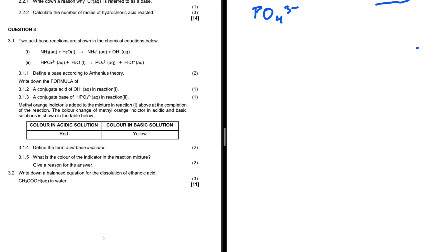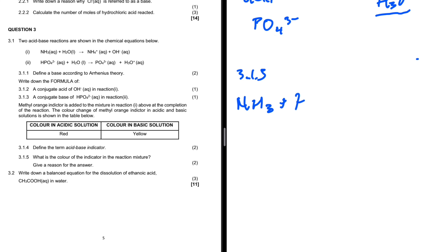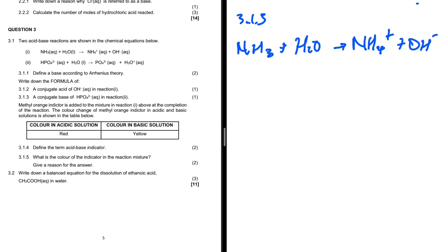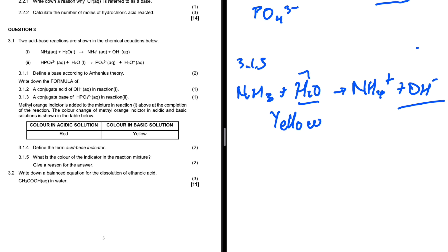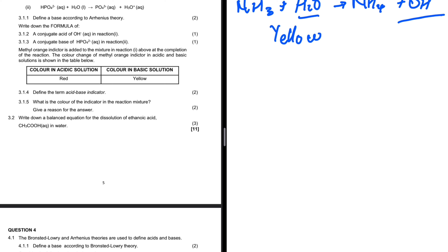Question 3.1.5 asks what is the color of the indicator in the reaction mixture and gives a reason. Our reaction is NH₃ plus H₂O giving NH₄⁺ plus OH⁻. Therefore the indicator will turn yellow because the solution contains OH⁻ ions, making it basic.